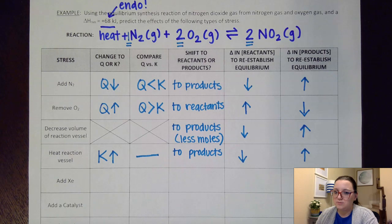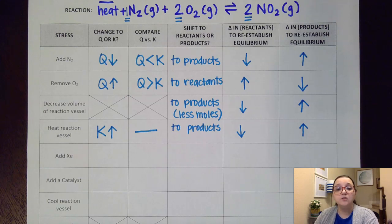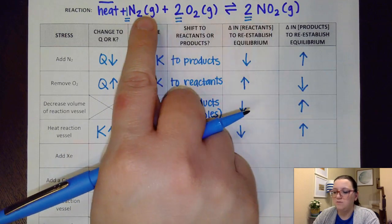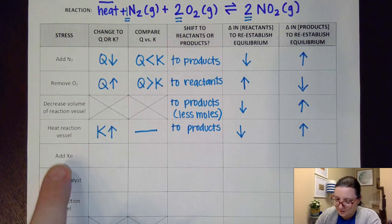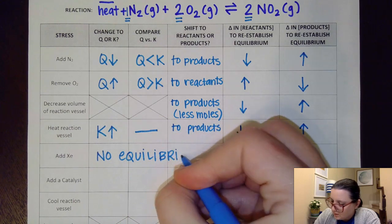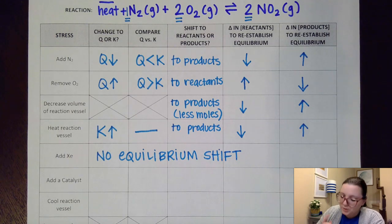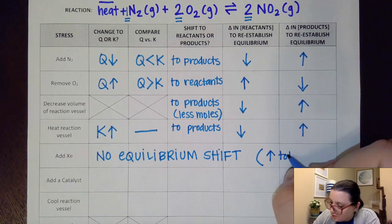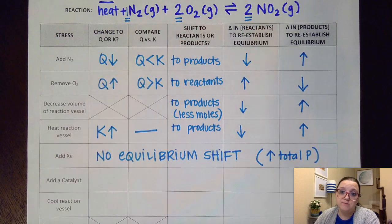All right, now I'll be honest with y'all, these last two are kind of tricks. Let's talk about why. The first one here, it says that I'm going to add xenon. Now I know that xenon is in group 18. I know group 18 are the noble gases. I know that the noble gases are inert, meaning they don't react with anything. And so if I put xenon into this, it's not going to react with any of these gases, so it's not going to affect any of these molarities, any of these concentrations. So therefore, this guy right here would cause no equilibrium shift. It would do pretty much nothing, which is kind of nice, right? Now the one thing it would do is it would increase the total pressure in the container, but it wouldn't change any of the individual pressures or individual molarities of any of these gases.